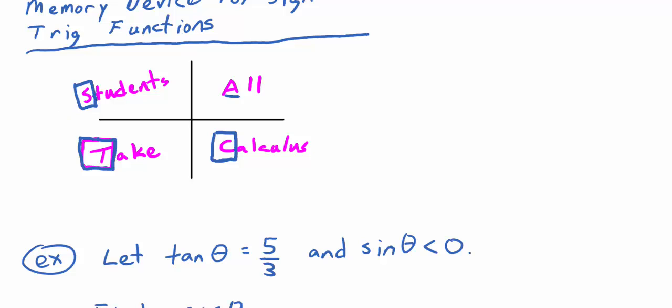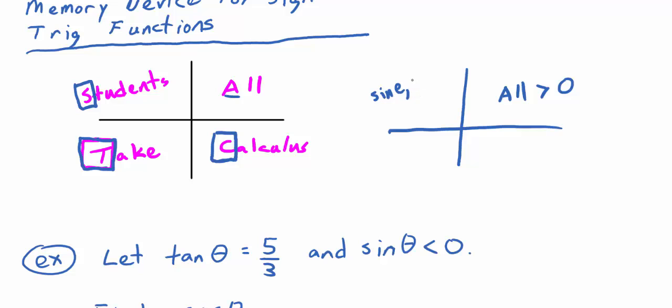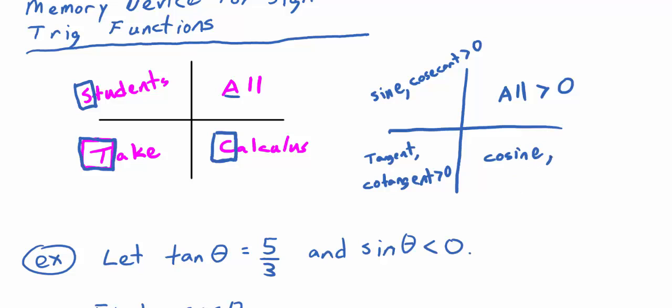In quadrant one, all trig functions are greater than zero. In quadrant two, sine and its reciprocal cosecant are greater than zero. In quadrant three, tangent and its reciprocal cotangent are greater than zero. In quadrant four, cosine and its reciprocal secant are greater than zero. In the third quadrant, all the rest — sine, cosine, cosecant, secant — are negative.